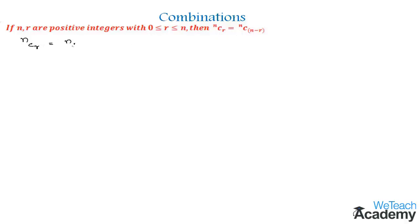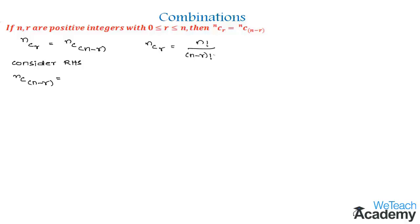To prove this theorem, first let us consider the right-hand side, which is nC(n−r). We observe that it is in the form of the formula nCr, given by n! divided by (n−r)! × r!, where r is equal to n−r. By applying the formula, we get n! divided by (n − (n−r))! × (n−r)!.